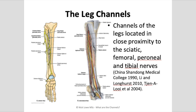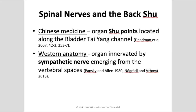One of my favourites: you can see where the common peroneal nerve branches into the superficial peroneal nerve and the deep peroneal nerve at Gallbladder 34, and then follows the pathway of the stomach yang ming and gallbladder shao yang leg channels. Again, we have direct anatomical comparisons between the channel systems and Western anatomy.